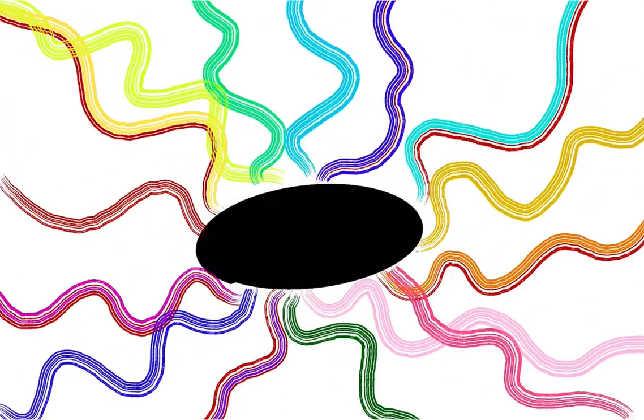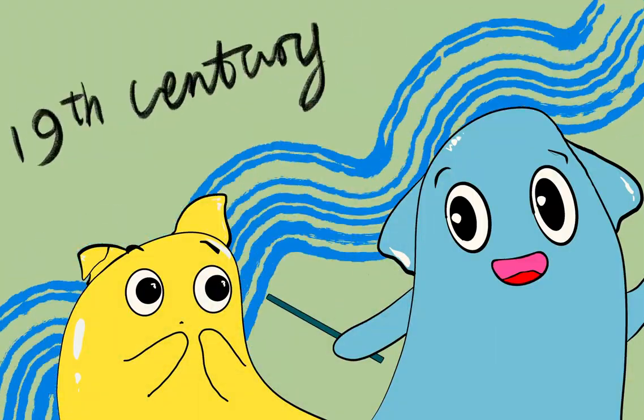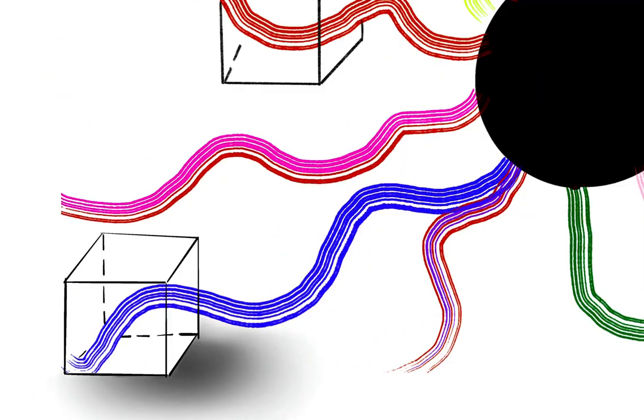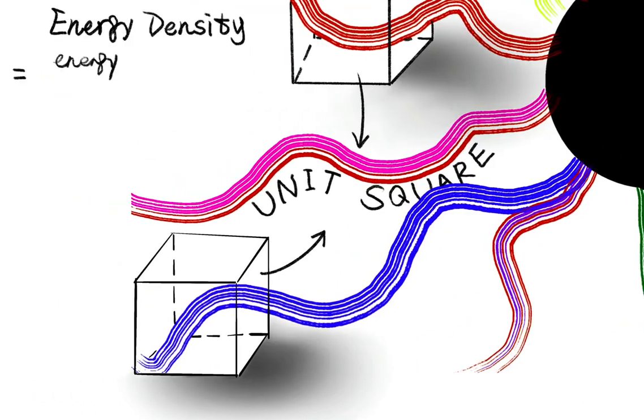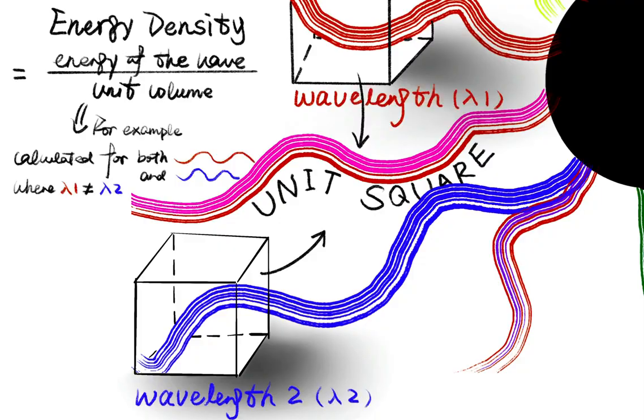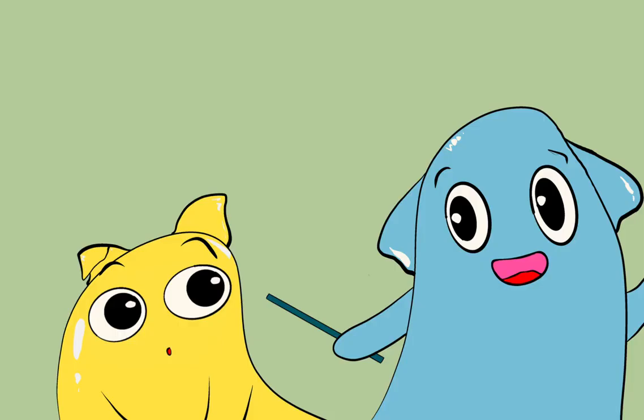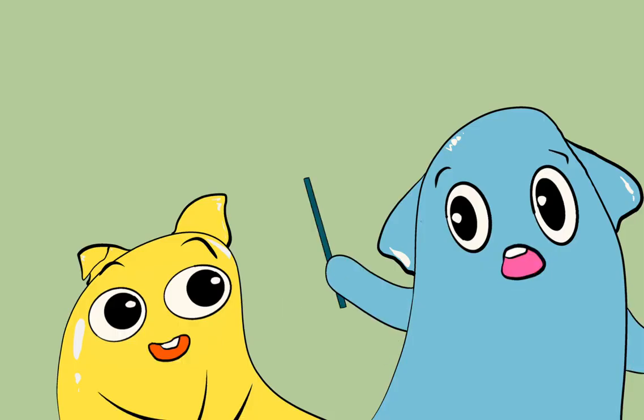A black body is an ideal object that absorbs all types of energy and re-emits them in the form of radiation. In the 19th century, scientists were interested in how much energy per unit volume was emitted in different frequencies of the radiation. So, they set up an experiment like this to find out.